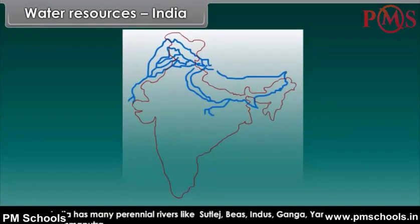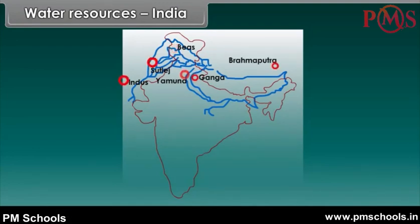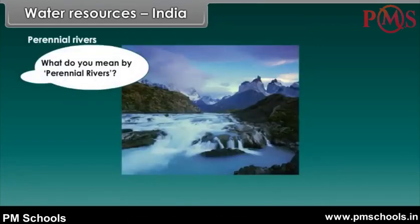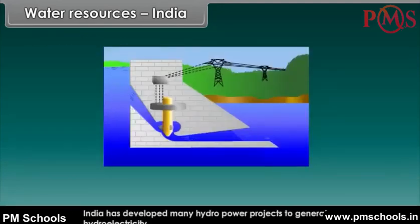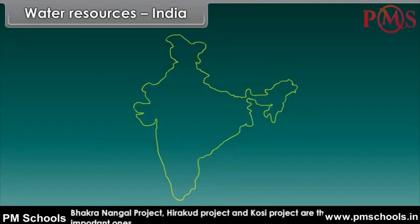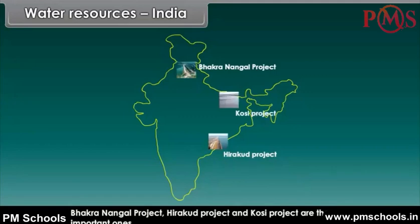India has many perennial rivers like Sutlej, Beas, Indus, Ganga, Yamuna, and Brahmaputra. Perennial rivers are those rivers where water can be obtained regularly throughout the year. India has developed many hydropower projects to generate hydroelectricity, of which the Bhakra Nangal project, Hirakud project, and Kosi project are the important ones.